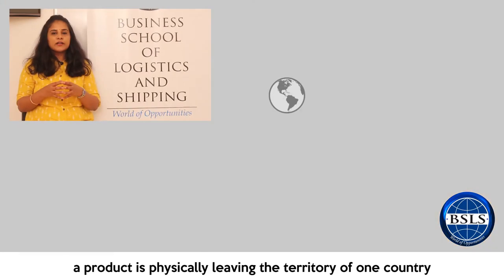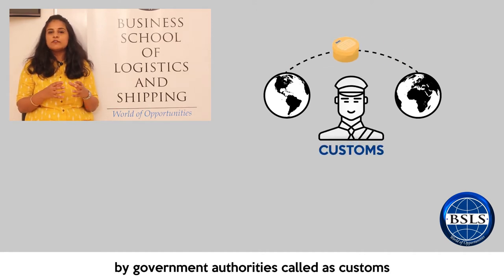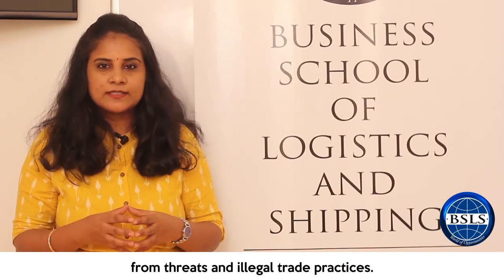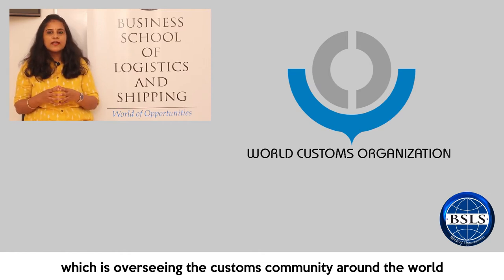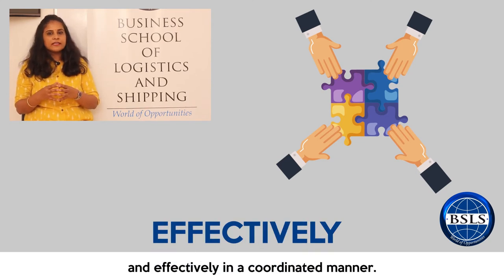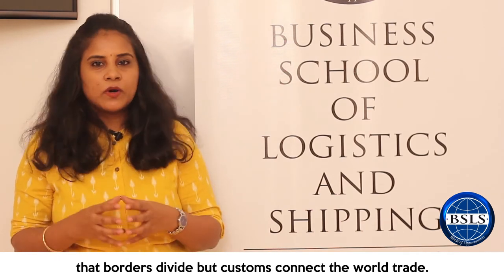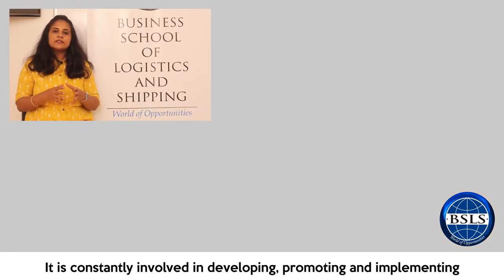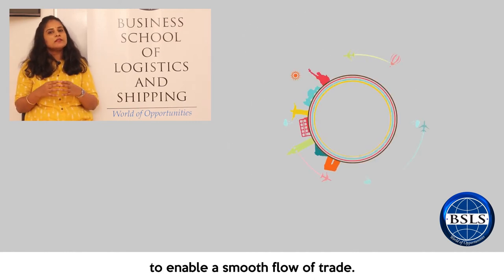In global trade, a product physically leaves the territory of one country and enters the territory of another. These international territories are monitored by government authorities called customs, whose main responsibility is to protect the country from threats and illegal trade practices. The World Customs Organization is the global organization overseeing the customs community around the world, helping them work efficiently and effectively in a coordinated manner. WCO believes that borders divide but customs connect world trade. It is known for work in areas such as commodity classification, valuation, supply chain security, and is constantly involved in developing, promoting and implementing modern customs systems and procedures to enable smooth flow of trade.